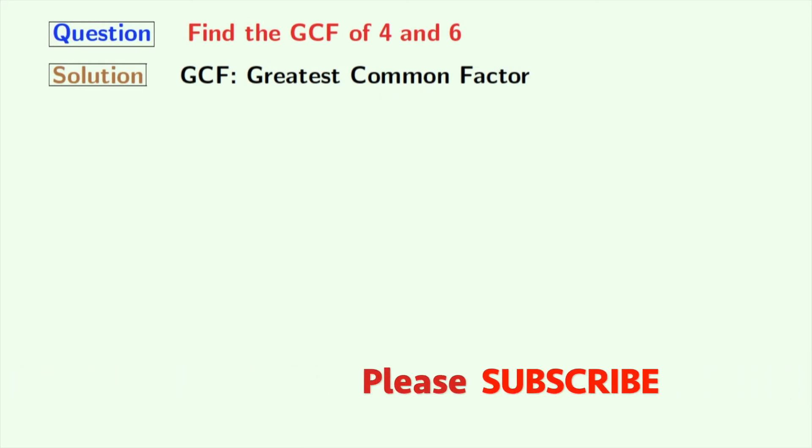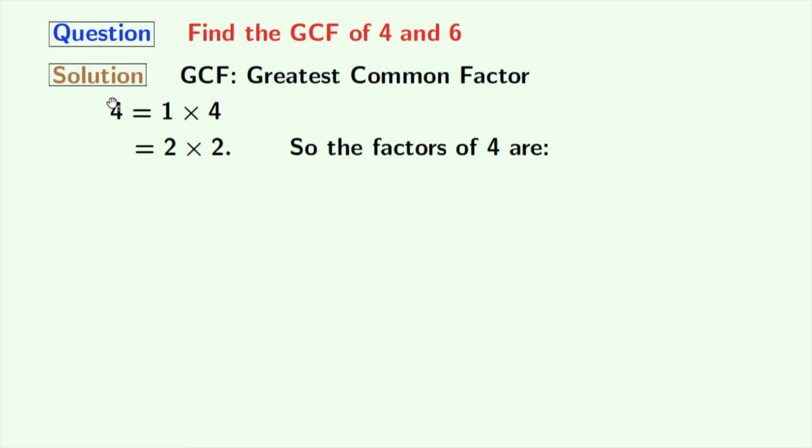So, let's find the factors of 4. We can express 4 as 1 times 4. If we check for 2, we can see that 4 is equal to 2 times 2. There is no other way in which you can express 4, so stop here. So, the factors of 4 are 1, 2, and 4.